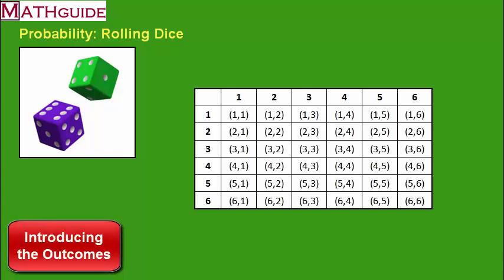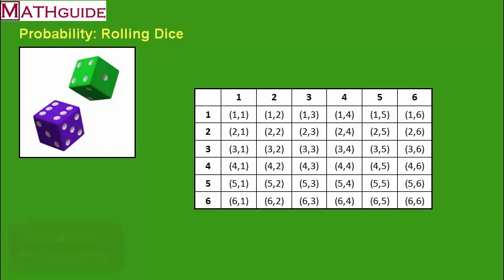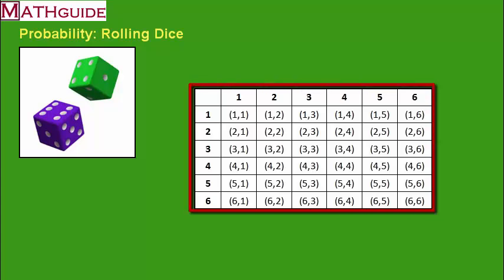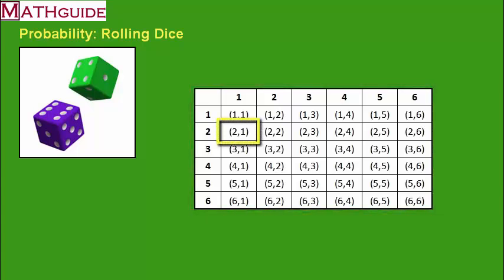Before we begin our first problem, let's declare that we're rolling two six-sided dice — in other words, two standard dice. When people think of rolling a die, they think of these six-sided dice that come up in a variety of games. You'll see that I've got a table on the right side, and on this table you can see there's a bunch of numbers with pairs of numbers in each little rectangle.